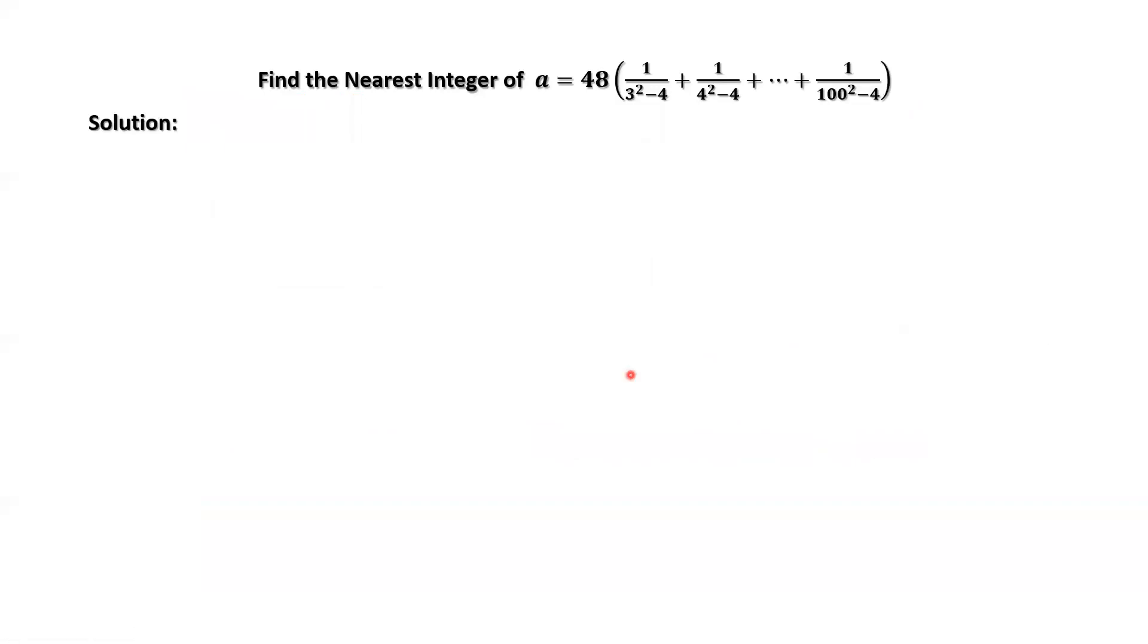This idea is based on the following theoretical result. If n is bigger than or equal to 3, n is a positive integer, then we have 1 over n squared minus 4 equals 1 over 4 times 1 over n minus 2 minus 1 over n plus 2.